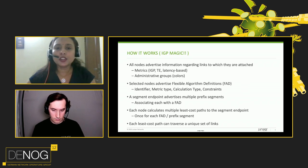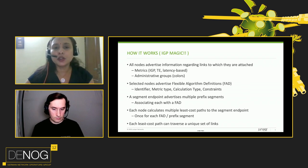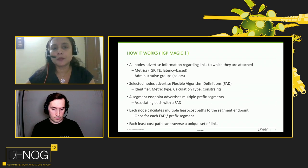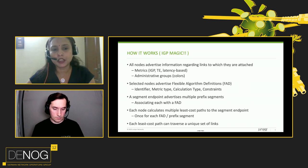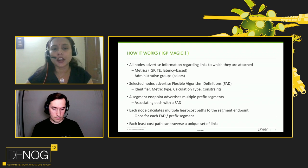Each node advertises which flex algorithms it participates in. In a network, a single node can participate in one or more flex algorithms. Once the flex algorithm definition is in place and also the prefix segment for each flex algorithm is in place, each node calculates multiple least cost paths to the segment endpoint — one for each FAD or prefix segment — so we have least cost paths that can traverse a unique set of links.